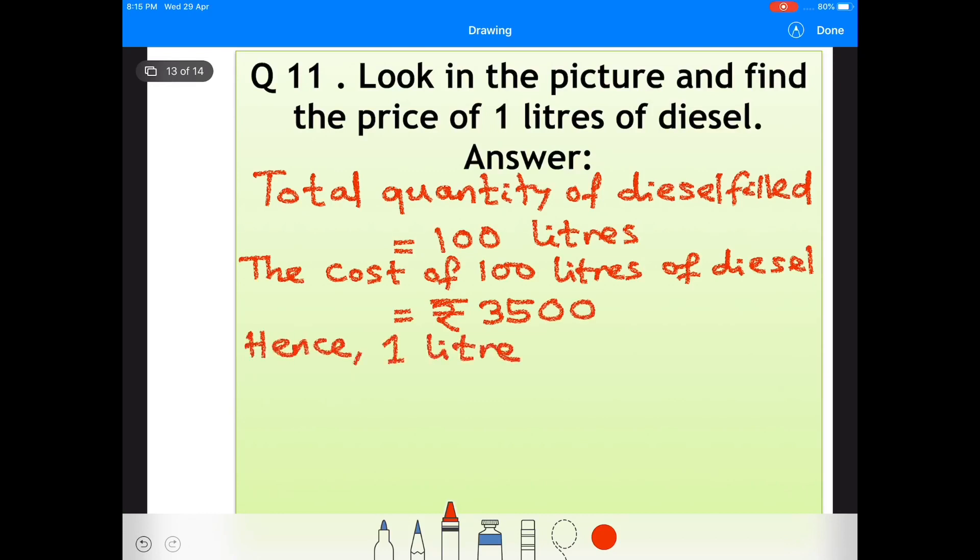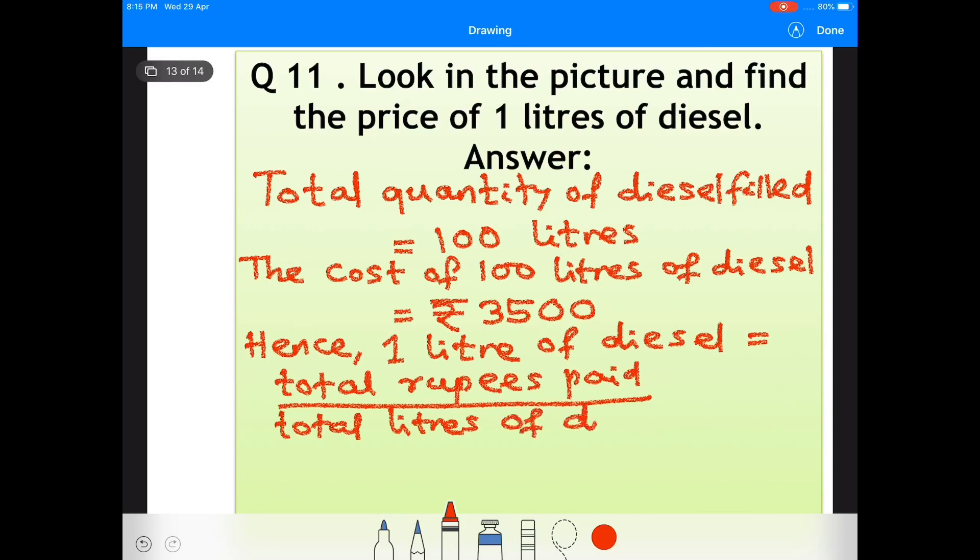Hence, 1 liter of diesel equals 3500 divided by 100, which equals rupees 35.